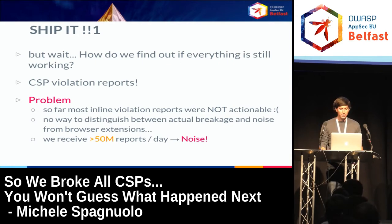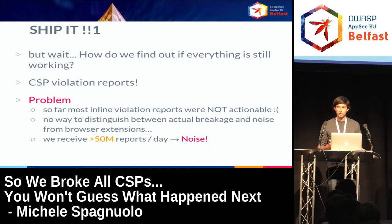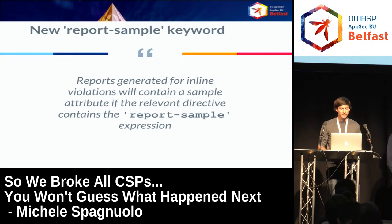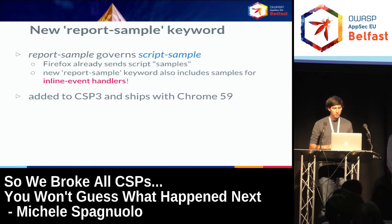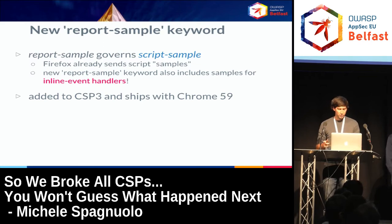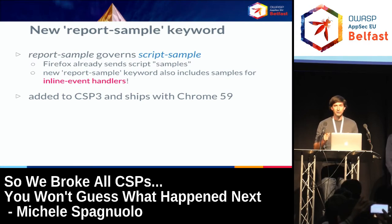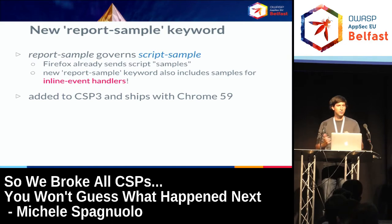The problem is that most violation reports are not actionable. It is basically impossible to distinguish between noise from browser extensions and real violations. If you get 50 million reports per day and most is noise, it's really problematic to find out if something is actually broken. There's a cool new keyword called 'report-sample' — similar to what Firefox already does — which sends the first 40 bytes of the script that was blocked. It's already shipped in Chrome 59 and also covers inline event handlers.